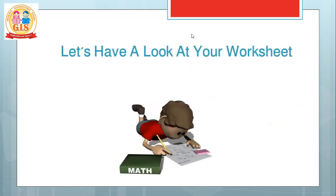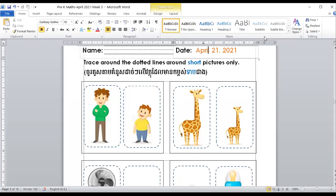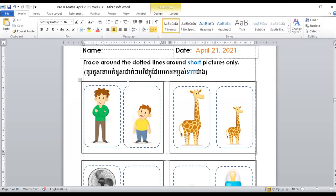Let's have a look at your worksheet. Open your worksheet to the date of April 21. Which one is shorter? The boy is shorter, so we trace around him. Now look at the two giraffes — which one is shorter? The baby giraffe is shorter, so let's trace around the shorter one. One round. Done. Good.